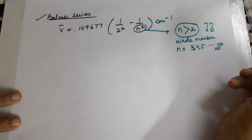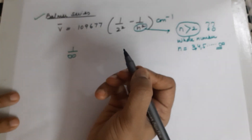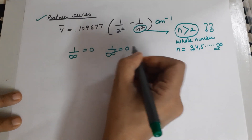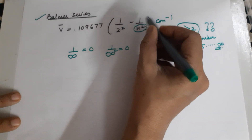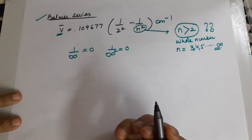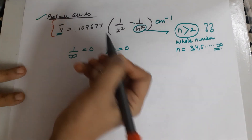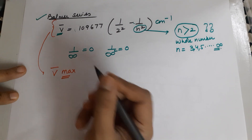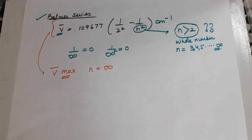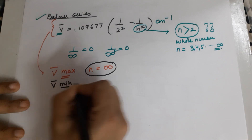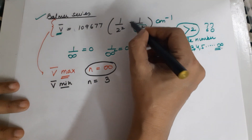If n is infinity, then 1/n² is taken to be 0, so there is no subtraction and the wave number value is highest — maximum. So if you require wave number to be maximum, take n as infinity. If you want wave number to be minimum, take n as 3, so that you have maximum subtraction.